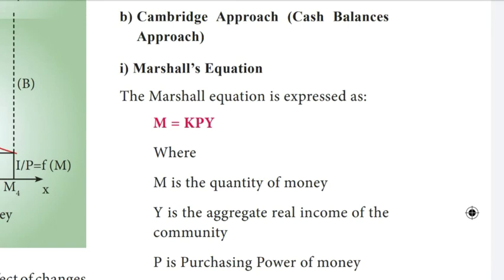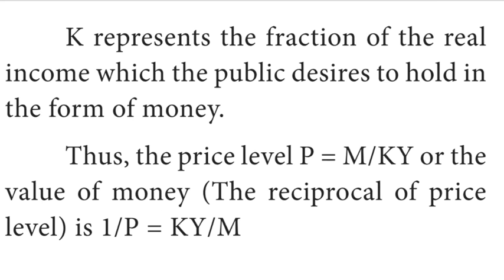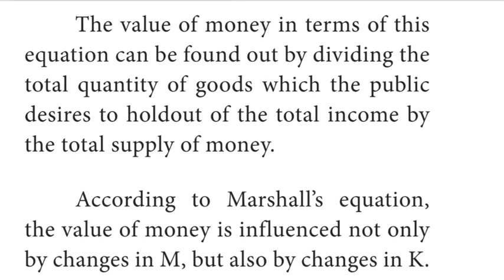Question number 4: State the Cambridge equation of the value of money. The Cambridge or cash balance approach deals with the Marshall equation, expressed as M = KPY, where M is the quantity of money, Y is the aggregate real income of the community, P is the price level, and K is the fraction of real income that the public desires to hold in the form of money. Thus the price level P = M/KY, or the value of money (reciprocal of price level) = KY/M. The value of money is influenced not only by changes in M but also by changes in K.